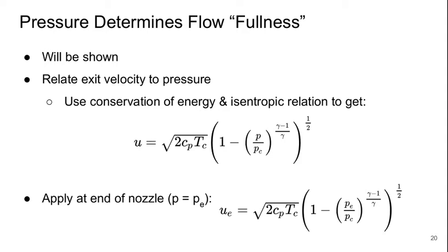But first, it's useful to relate the exit velocity to the pressure. So again, using conservation of energy and the isentropic relations, we can get the equation in the middle here, that the velocity at any point in the nozzle is related to the combustion chamber pressure and temperature and the local static pressure, P.